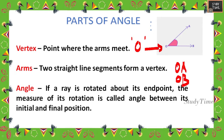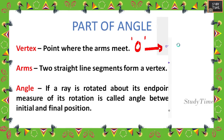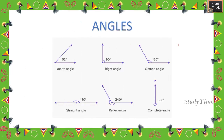If a ray is rotated about its endpoint, the measure of its rotation is called the angle between the initial and final position. These are the different types of angles.